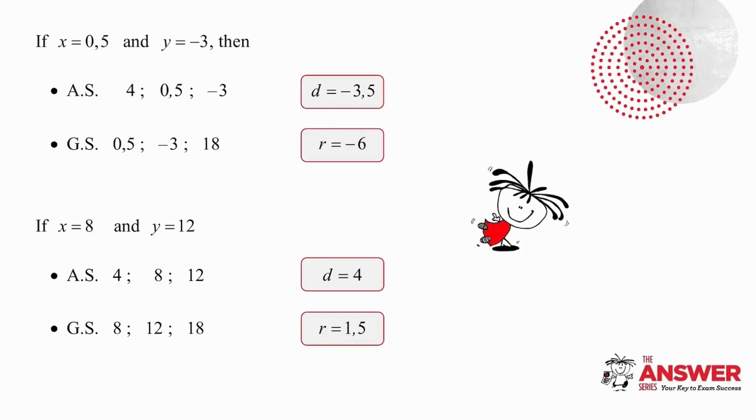So in this slide, I want you simply to pause the slide and to check the details. You will notice that when you use 0.5 for x and minus 3 for y, you can check that your arithmetic sequence does in fact give you a common difference of minus 3.5 and your geometric sequence gives you r equal to negative 6. If you take the different option of x equal to 8 and y equal to 12, you generate sequences with a difference of 4 and a ratio of 1.5.